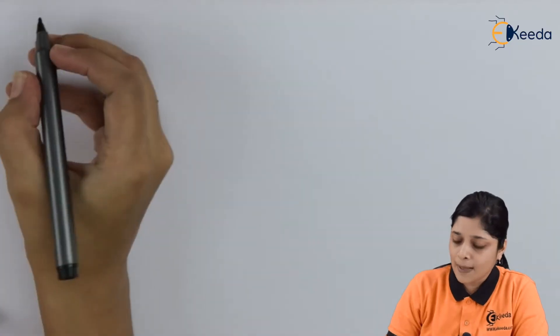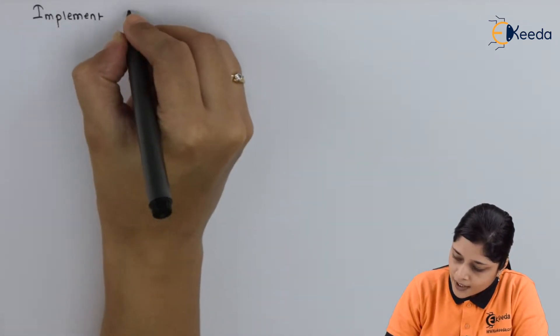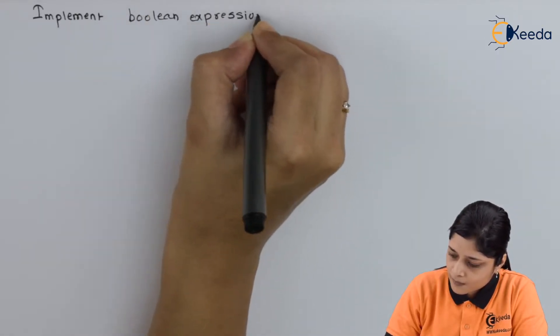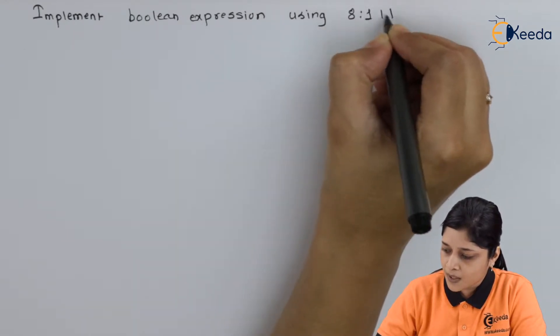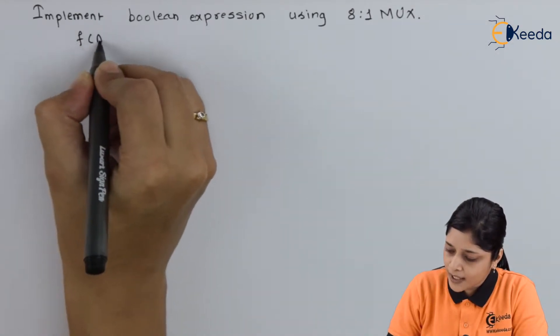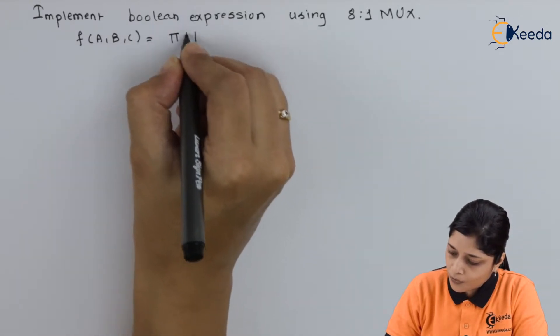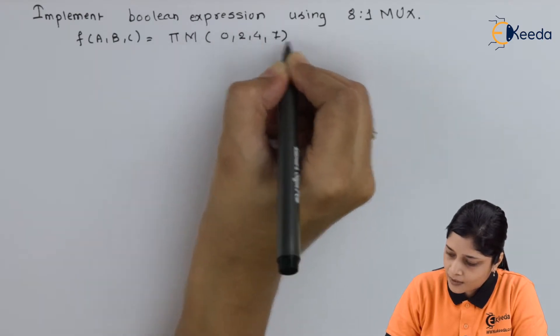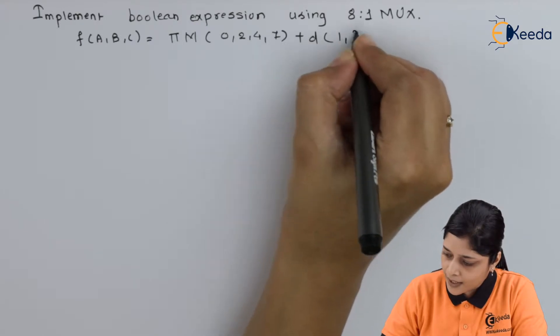So your example is implement boolean expression using 8 is to 1 MUX. Your question is f of A, B, C equals to product of max terms 0, 2, 4, 7 plus d inside bracket 1 and 3.